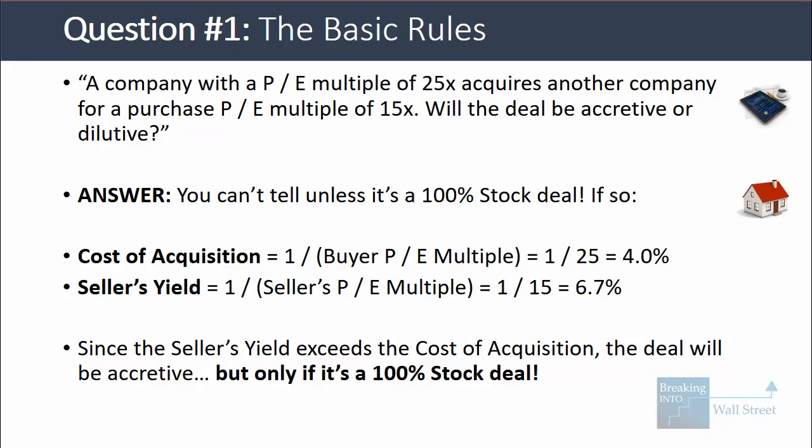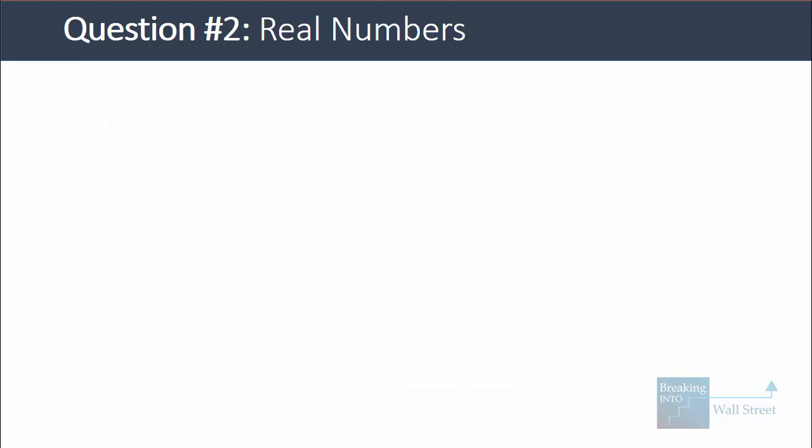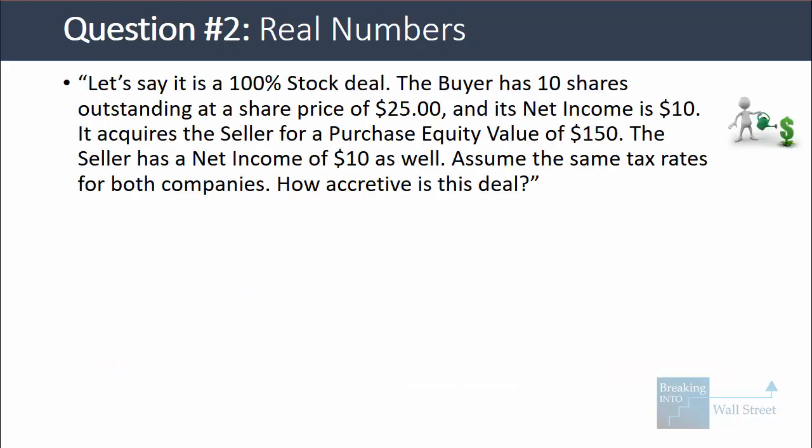That's a fairly simple question. Next, they might give you real numbers and ask you to walk through what happens. Let's say it is a 100% stock deal. The buyer has 10 shares outstanding, a share price of $25, and net income of 10, so an equity value of 250 and a PE multiple of 25. It acquires the seller for a purchase equity value of 150, and the seller has net income of 10, so the purchase PE multiple is 15. Assuming the same tax rates, how accretive is this deal? Not just is it accretive or dilutive, but by how much — what are the numbers and percentages?